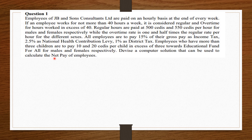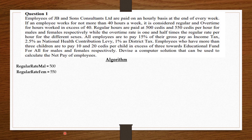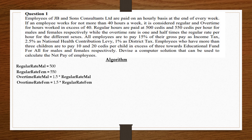Employees who have more than three children are to pay 10 cities and 20 cities per child in excess of three towards the educational fund for males and females respectively. Now onto the algorithm — we put down the basic information the question provides: the regular rate for males equals 500, the regular rate for females equals 550. For the overtime rates, it is 1.5 times the regular rate for males, and 1.5 times the regular rate for females.